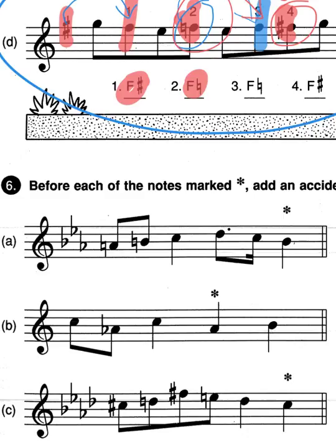We've got a B-flat in the key signature. That got turned into a B-natural. Now we need to add an accidental to cancel out the previous accidental.